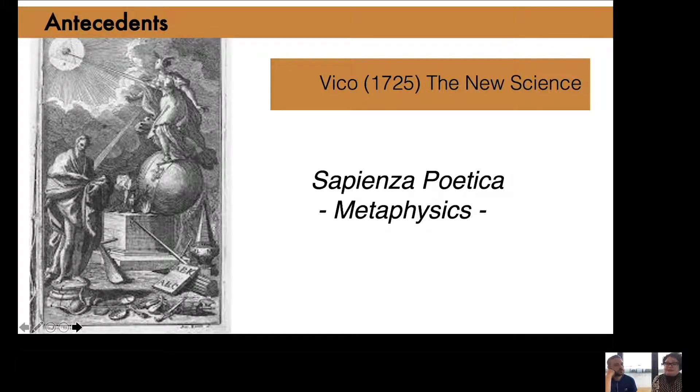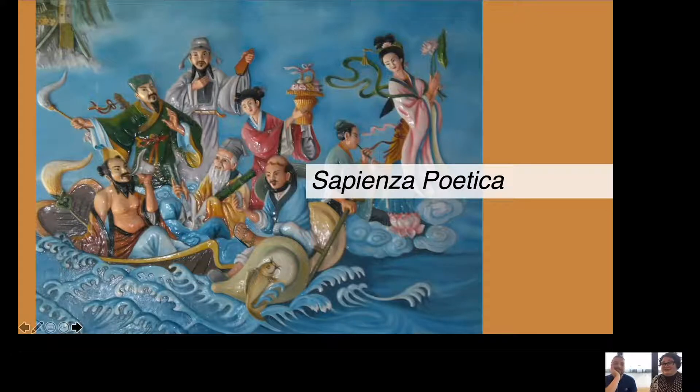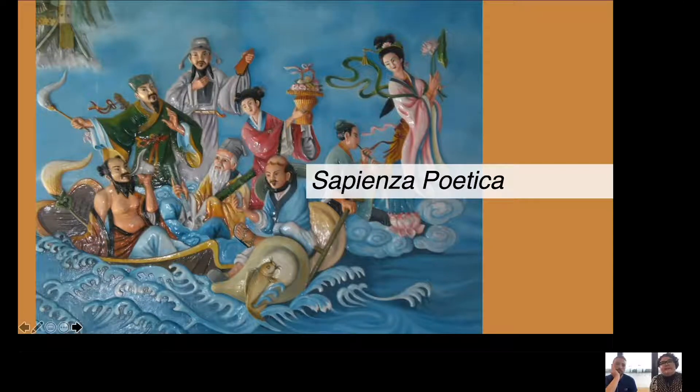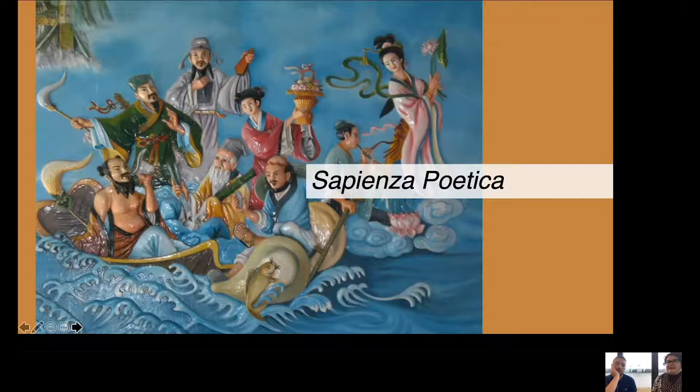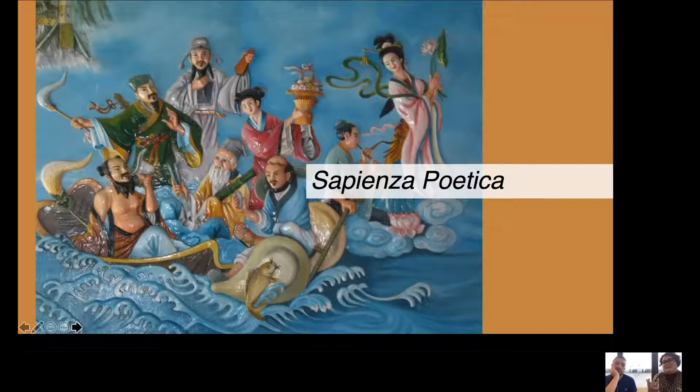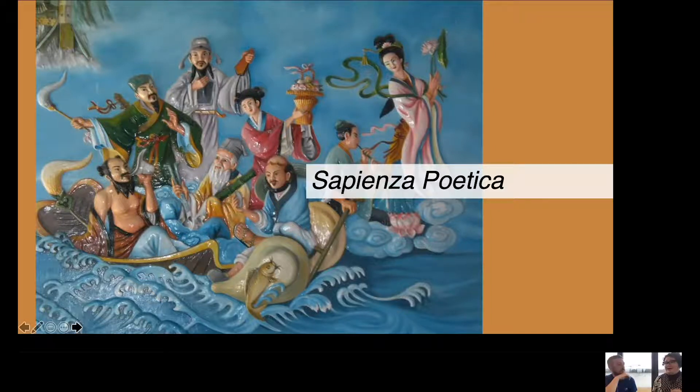What I want you to remember is that Vico realized something that he calls sapiens sapiens poetica. And all what it means is the knowledge in poetry. And sapiens poetica has to do with something that is not physical, that is metaphysical, because it's a sign. And it's this idea that the stories, the myth, religious stories, all this poetry, have a moral, have a lesson, have a knowledge.